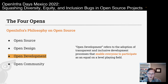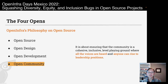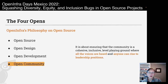Open development is about adopting transparent and inclusive development processes that enable everyone to participate as an equal on a level playing field. We want everything to be open and transparent, we want everyone to participate, and we will create the processes for them to do this. The last open — open community — is about ensuring that the community is a cohesive, inclusive level playing ground where all voices are heard and anyone can rise to a leadership position. In OpenInfra, we want to be welcoming and inclusive, and there is a commitment to make this happen.